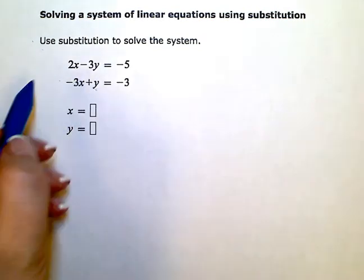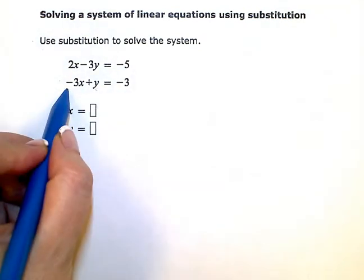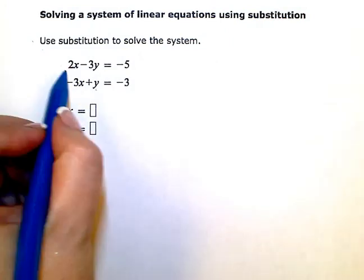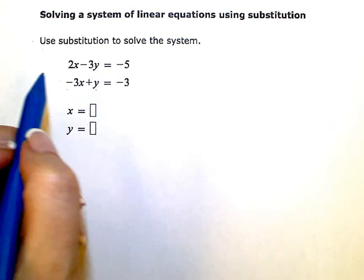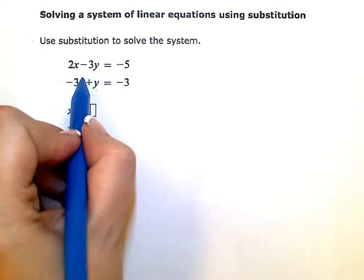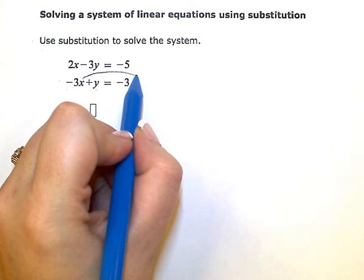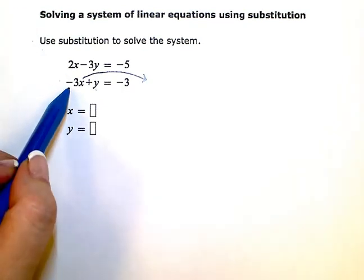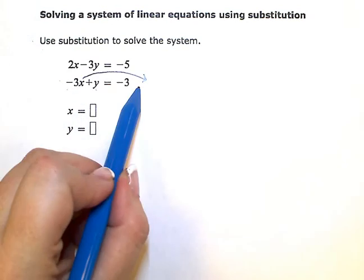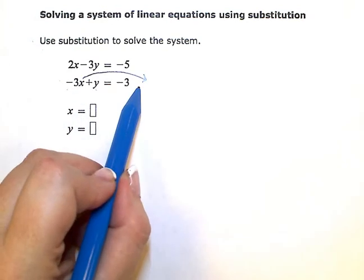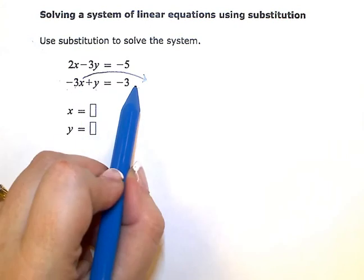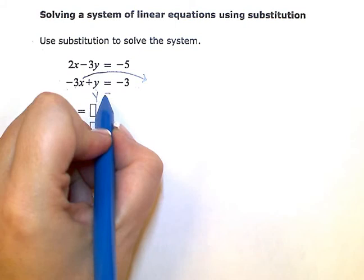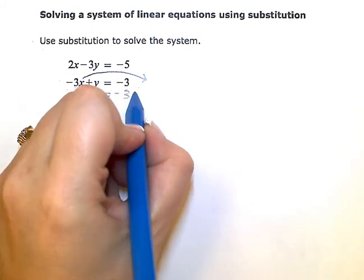And all I need to do is get rid of this negative 3x. So I could add 3x to both sides or as a kind of mental shortcut here, I'm just going to think of this as moving the negative 3x over to the other side of the equals. But when I do that, instead of negative 3x on the left, it's going to become positive 3x on the right. So my new equation will be y equals negative 3 plus 3x.